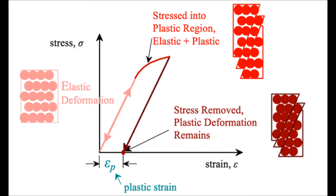When a material is put under tension, the atoms of the material are pulled apart from one another. Atoms can move small distances relative to their equilibrium positions without actually changing position in the material. Once the load is removed, the atoms will return to their equilibrium distance apart.